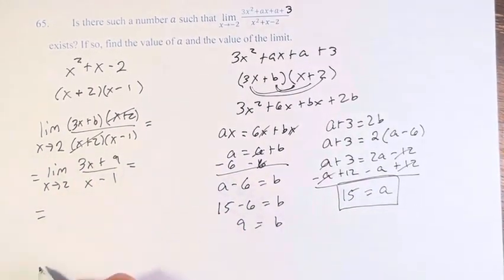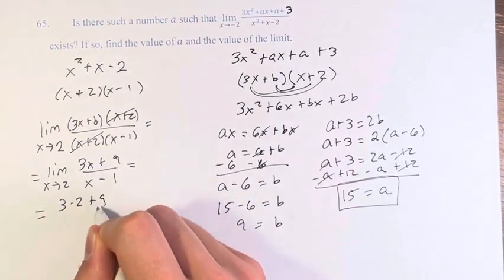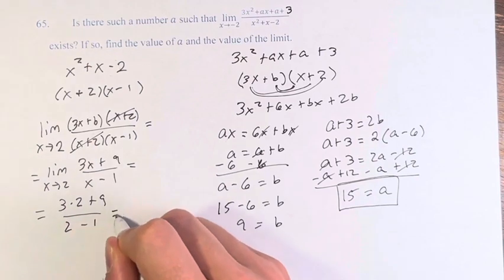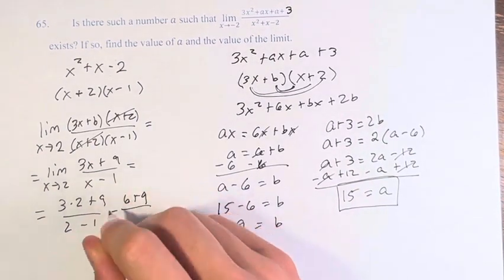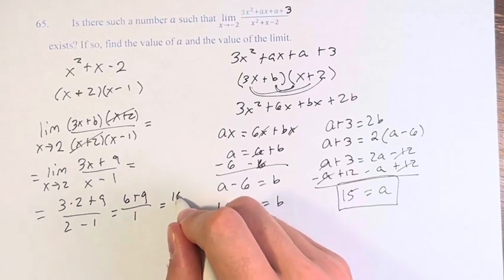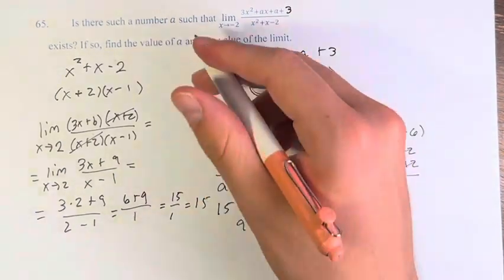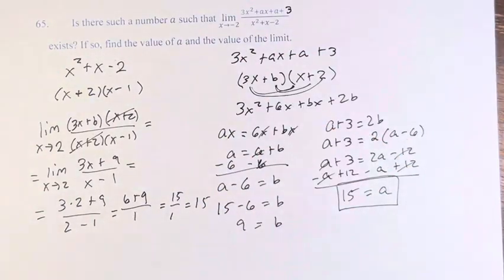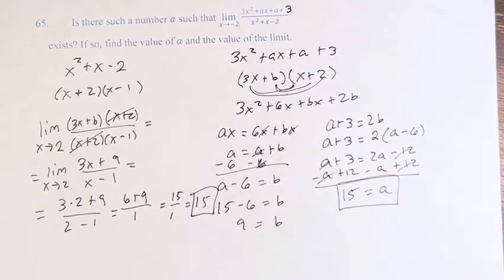Plugging in 2 now, because we have canceled the problem with the domain restriction, 3 times 2 plus 9 over 2 minus 1. 3 times 2 is 6. So 6 plus 9 over 2 minus 1 is 1. This is 15 over 1, which is 15. Therefore, we have the limit and a both equaling 15.